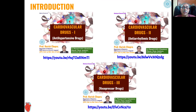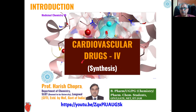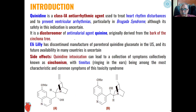As I have told you, in the first three lectures we have discussed about various types of cardiovascular drugs — antihypertensive drugs, antiarrhythmic drugs, and vasopressor drugs — whereas in the fourth lecture we have discussed about some synthesis of common cardiovascular agents. The present lecture deals with the synthesis of quinidine.